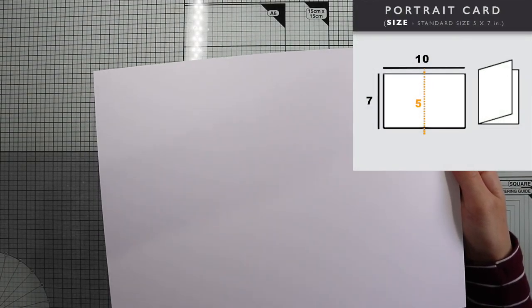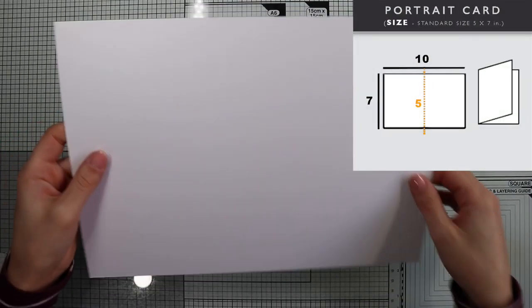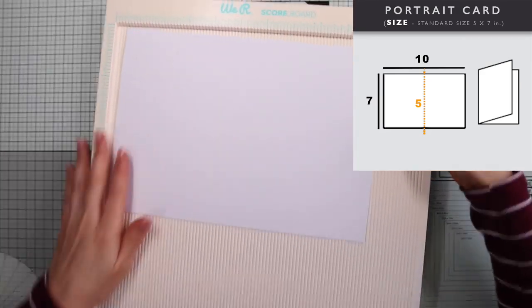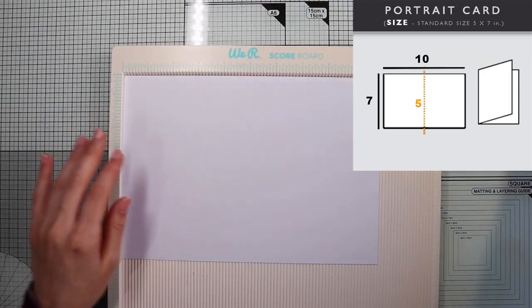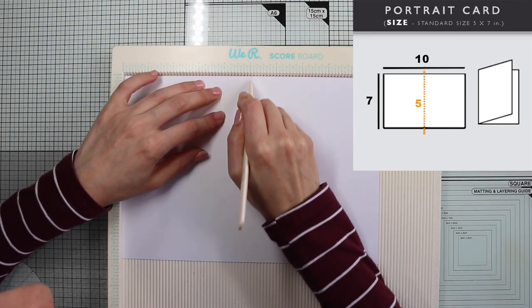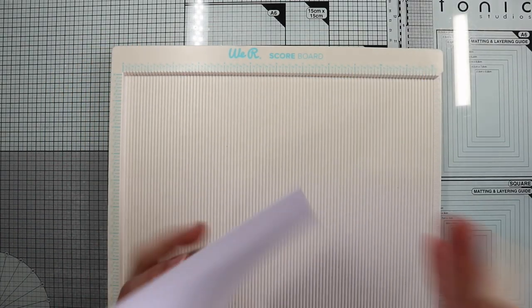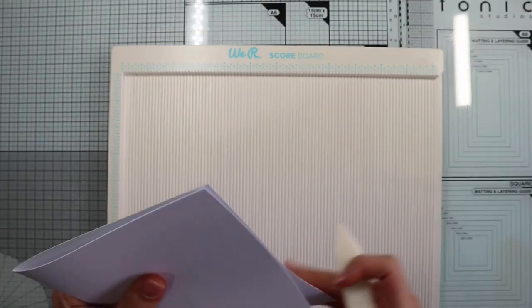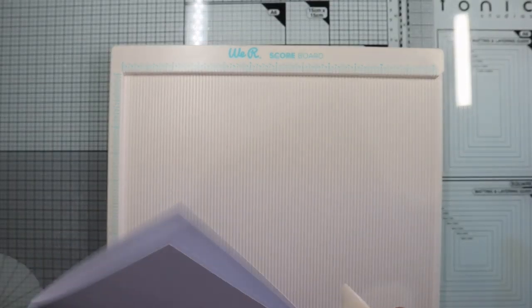First, I'm gonna prepare the card base on 300gsm white cardstock. It will be a standard size card that's 5 by 7 inches. I usually use the American A2 size, that is 4 and a quarter by 5 and a half.